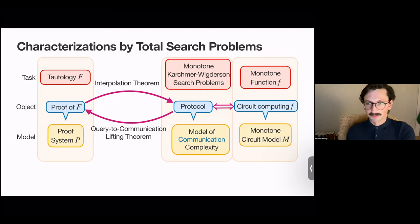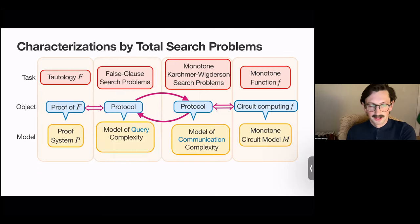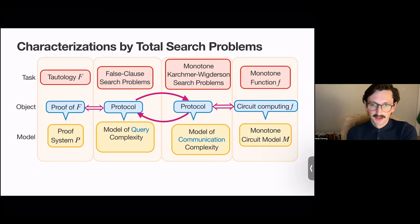Very quickly — the false clause search problem is: you're given a tautology and a truth assignment, and you want to find a clause that's falsified in the negation of that tautology. So we can view these interpolation theorems and query-to-communication lifting theorems as relating query protocols for the false clause search problem to communication protocols for the monotone Karchmer-Wigderson search problem. And these are both total search problems.